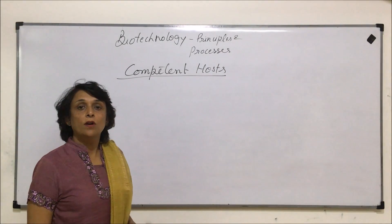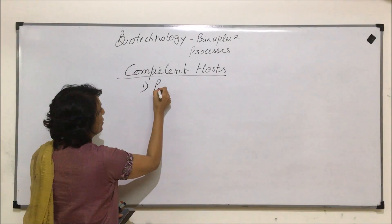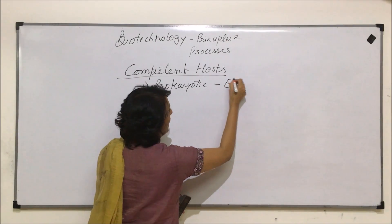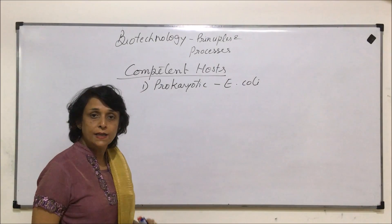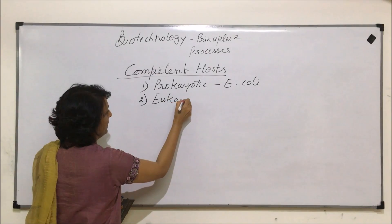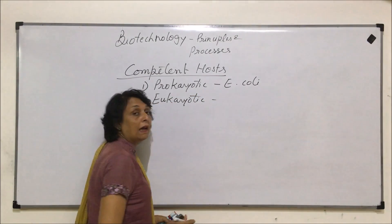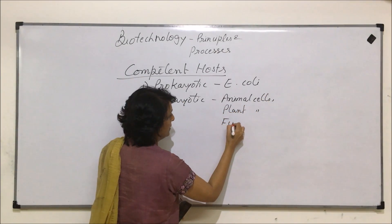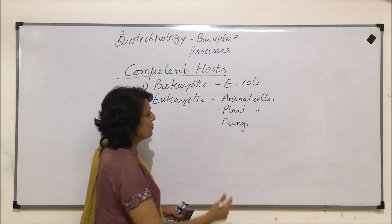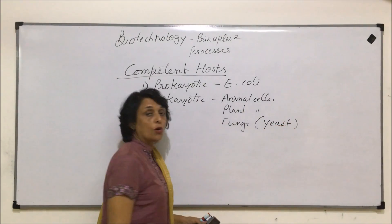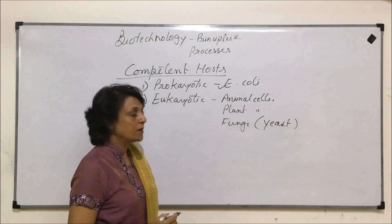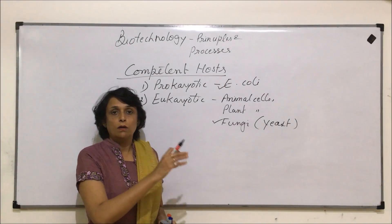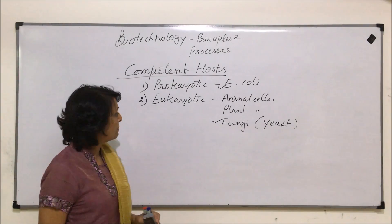We can use eukaryotic as well as prokaryotic cells as hosts. The most commonly used prokaryotic host cell is E. coli. Amongst eukaryotic cells, we have three options: animal cells, plant cells, and fungi. The most commonly used fungus is yeast. So most common prokaryotic is E. coli, and most common eukaryotic is yeast.